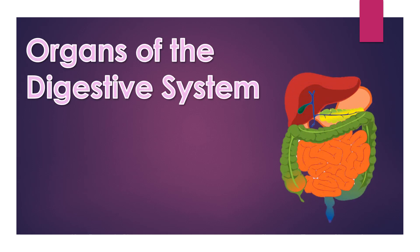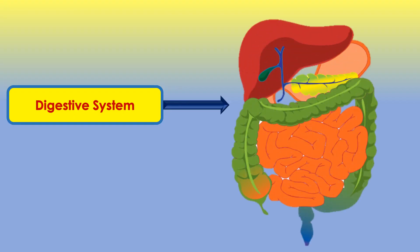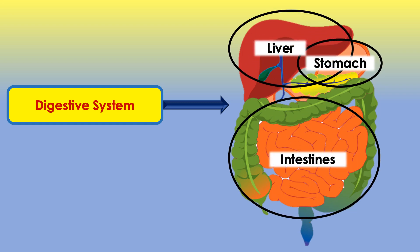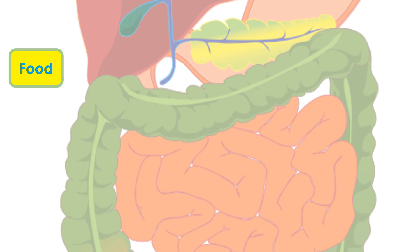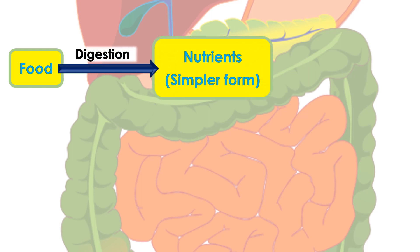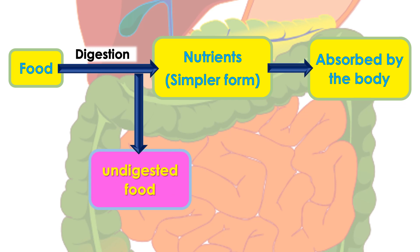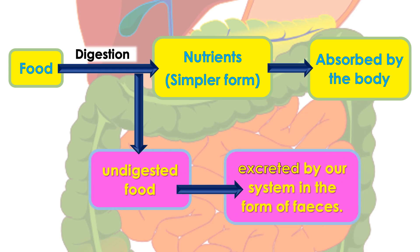In this video we will learn about organs of the digestive system. The digestive system is a group of organs that work together to carry out digestion. Digestion is a process by which food is broken down into simpler form, so that the body can absorb nutrition from it. The leftover undigested remains are removed, or excreted by our system, in the form of feces.